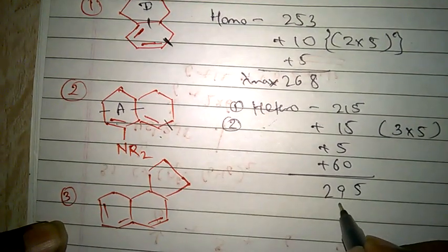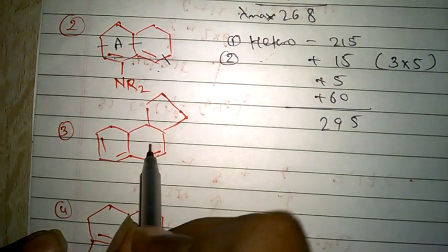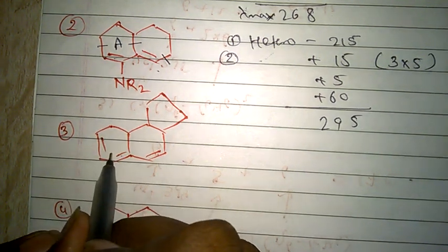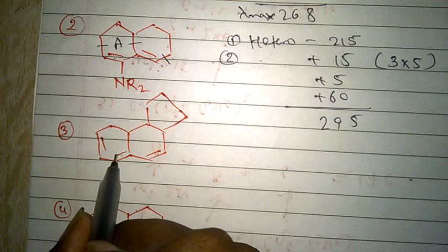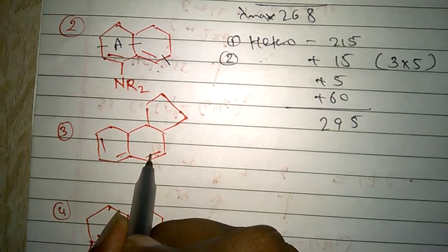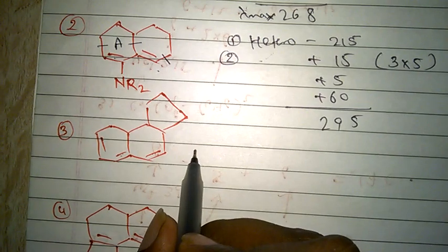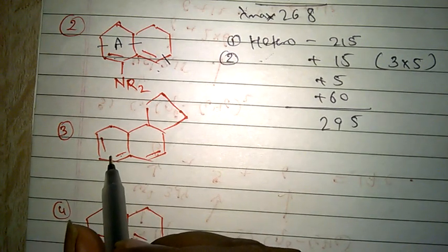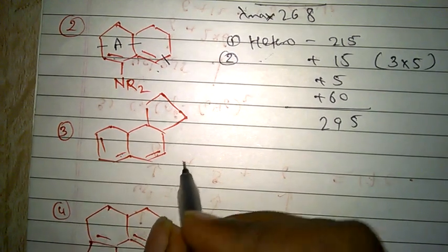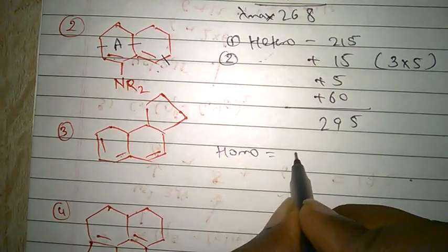Now work on this example. See, in this ring, there are two possibilities. If you take this diene, then it's homoannular. If you take this diene, then it will be heteroannular. But heteroannular has a value of 215 and homoannular has a value of 253. In this case, we have to take homoannular. So the parent we are taking is homoannular, that is 253.